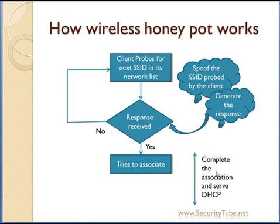To complete the association, the attacker may have to provide a DHCP address to the client and carry out a successful association, so that the station does not feel it is associating with a rogue or honeypot access point. The station will always feel it is getting associated with a proper access point and is being served with all the correct credentials.